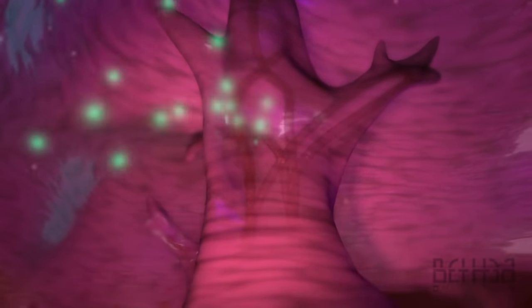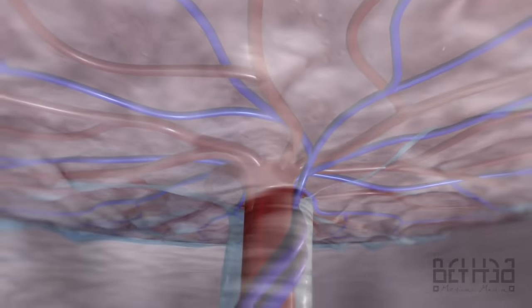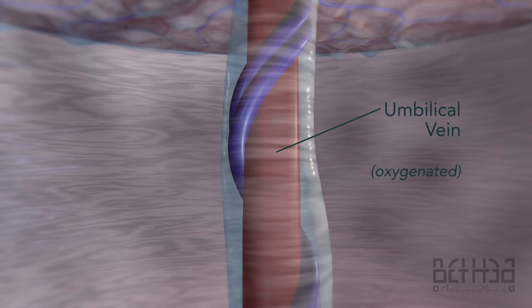Carbon dioxide and waste products are removed from the fetal circulation across the placental membrane to the maternal blood in the intervillus space. Oxygen and nutrients are transported across the placental membrane from the maternal blood to the fetal capillaries. Oxygenated fetal blood travels back through veins, converging to form a single umbilical vein that goes to the fetus.